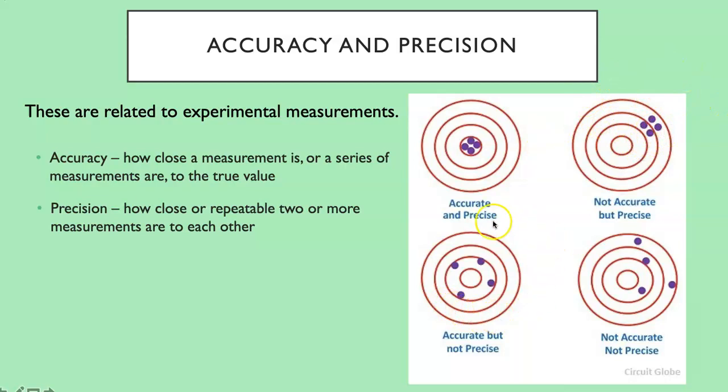Down here in the lower left, these values even though they're not on the bullseye, they fall around the bullseye and kind of average to the bullseye. So they are accurate but they're not very precise. You can see that there's a lot of error between them. And then finally over here on the lower right we have no accuracy and no precision. The average of these four darts is not near the bullseye and they are not clustered together.